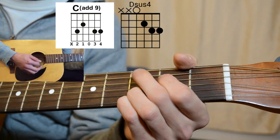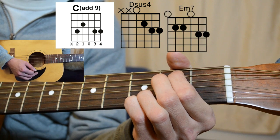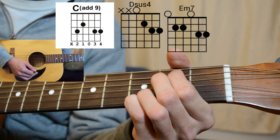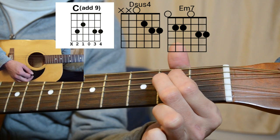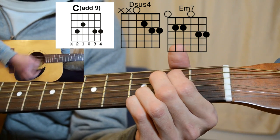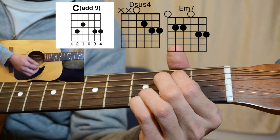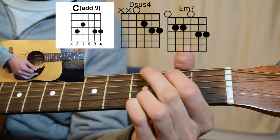So we're going from C add 9 to D sus 4 to E minor 7th. So E minor 7th is like an E minor, just with your two fingers on that second fret, plus your ring and your pinky finger on the 5th and 6th strings, and then to a G.